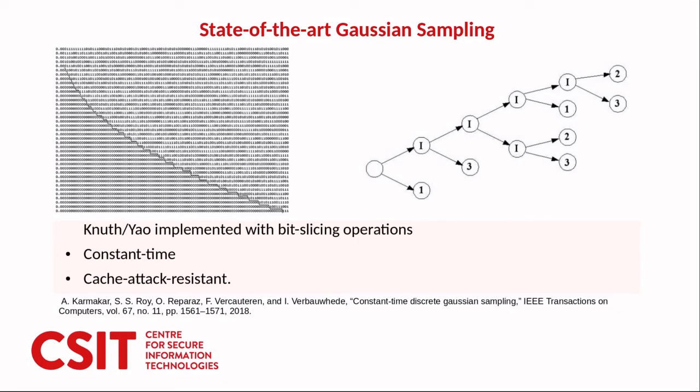We discussed the state of the art in Gaussian sampling and the state of the art in this paper and presentation is taken to be the Knuth-Yao bit slicing algorithm by Karmakar et al. Other developments have been made in Gaussian sampling however to reach performances greater than the Knuth-Yao set up in this paper they require the use of vectorized instructions and platform dependent code. So we compare with the most efficient generic algorithm which is the Knuth-Yao.